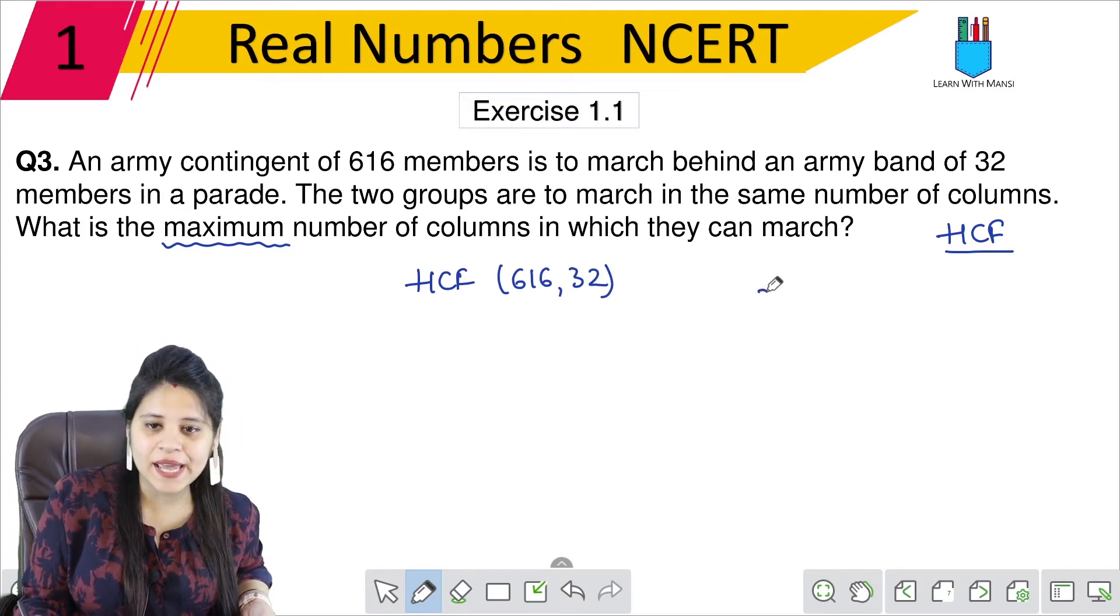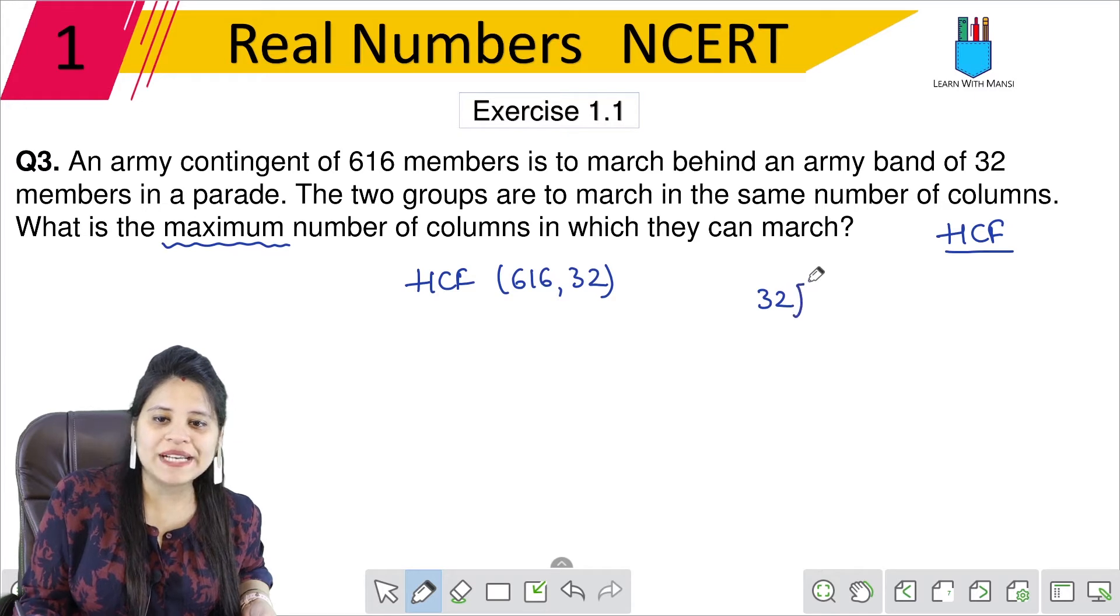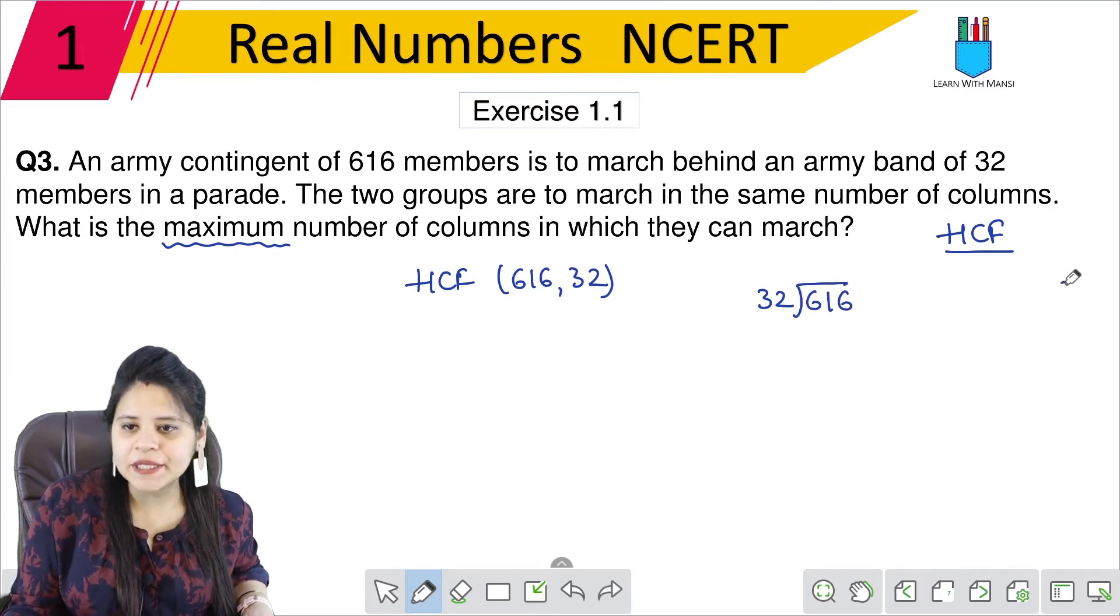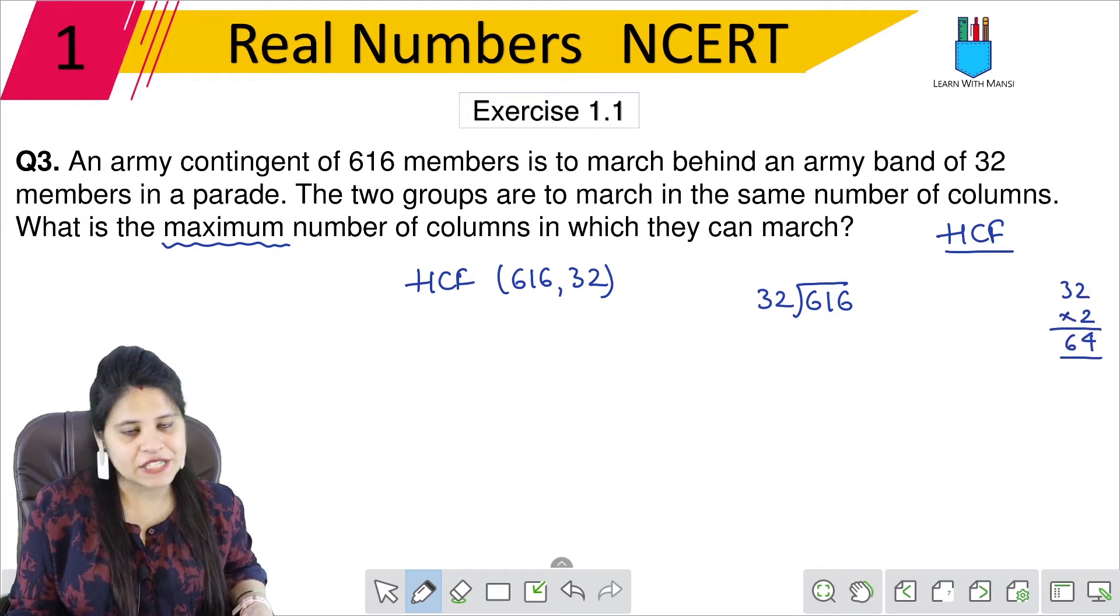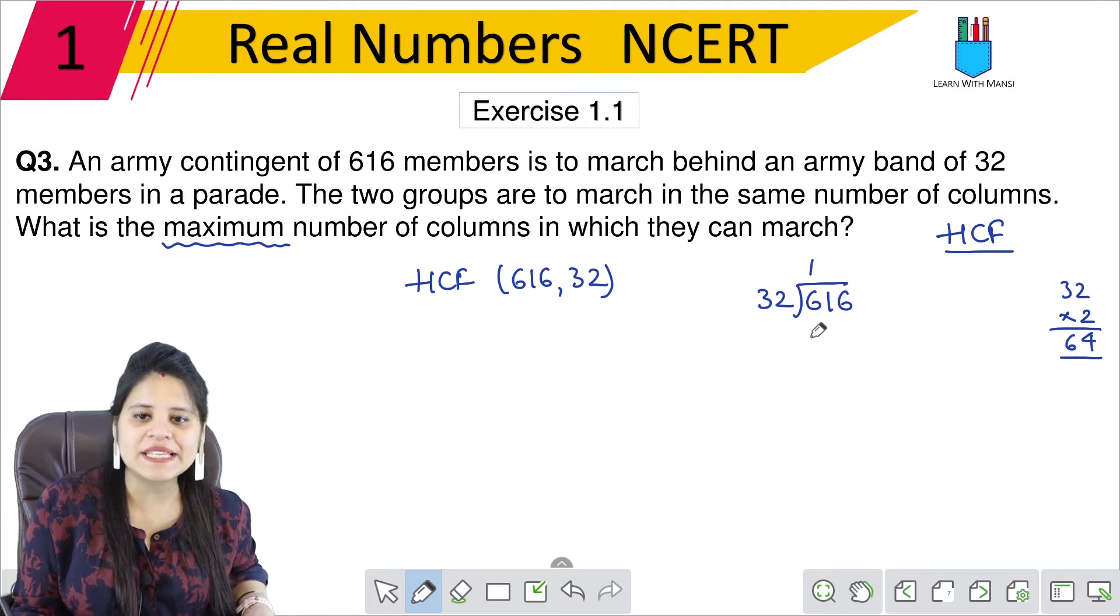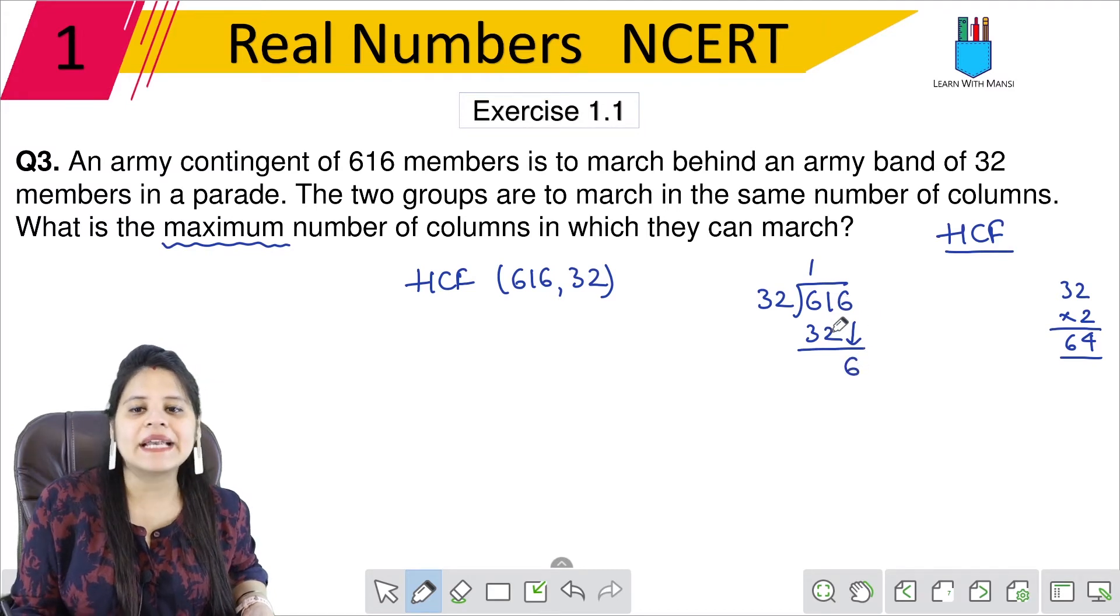So here, 32 is small. So we will divide 616 by 32. If I multiply 32 by 2, see 2 into 2 is 4, 2 into 3 is 6. It has grown from 61. That means we have to do 1. So 32 into 1 is 32. We have 6. And this is 11.